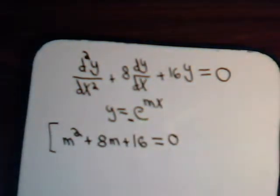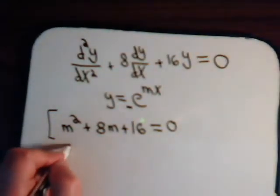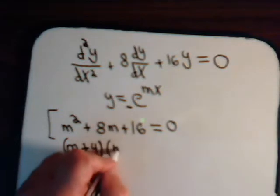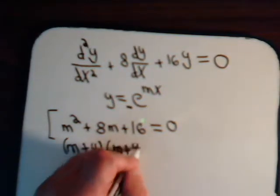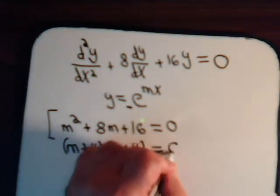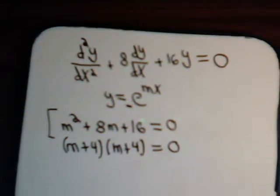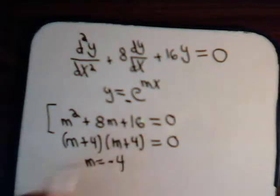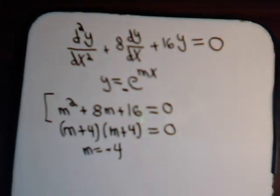Set it equal to zero. And we see we can write it like this equals zero. And again we have the repeated root of m equals minus 4.